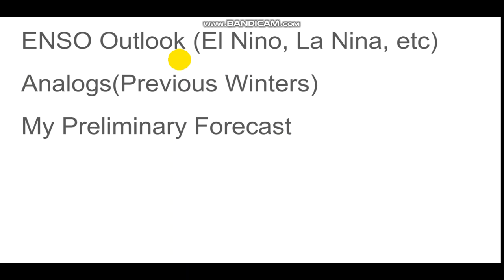The three factors that go into making this forecast are: the ENSO outlook, which stands for El Niño Southern Oscillation — including El Niño, La Niña, and neutral conditions; analogs, which are previous winters or time frames that can correlate to future patterns; and my preliminary fall and winter forecasts made several months back.